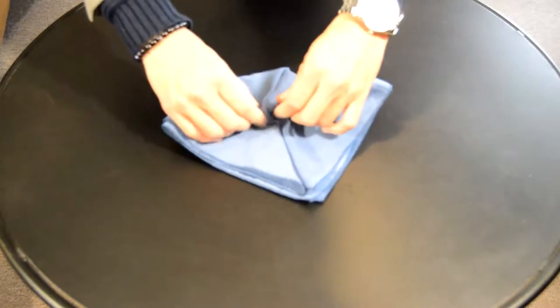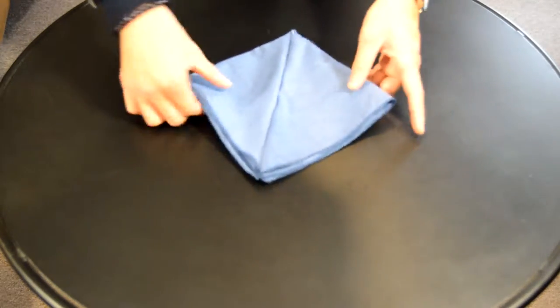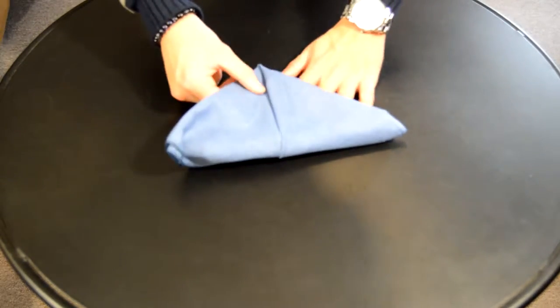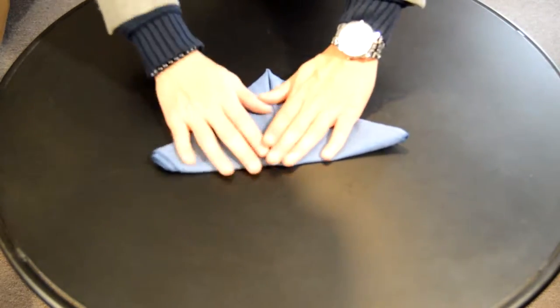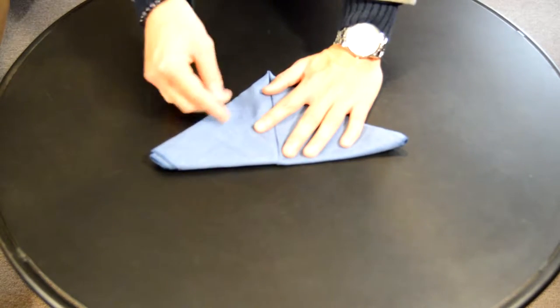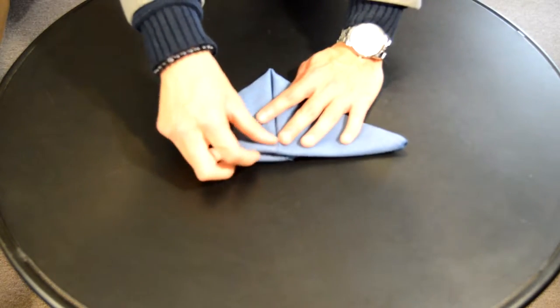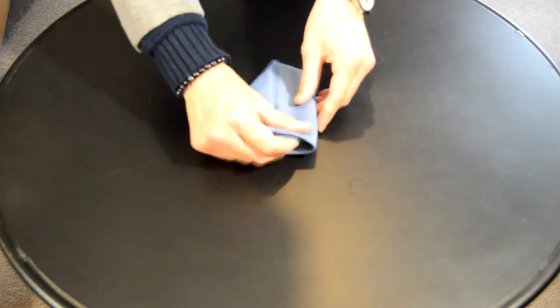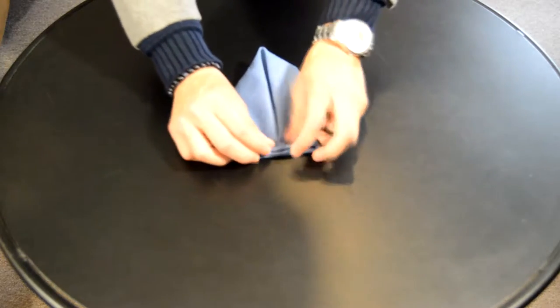You're going to fold that underneath the top part, then fold in the sides to adjust how wide you want your pocket square to be for your breast pocket. Fold it in just like this, and it's going to look just like that. That's it.